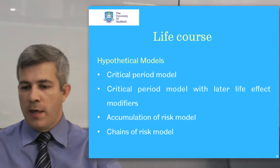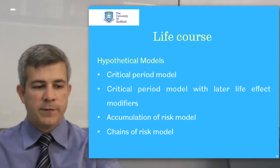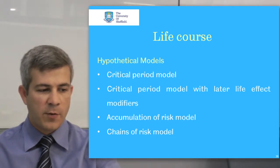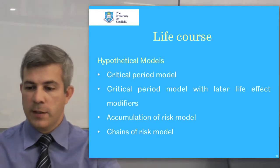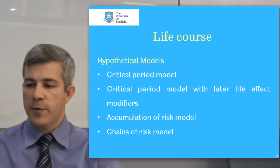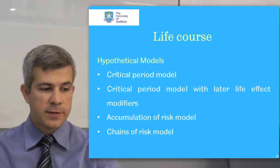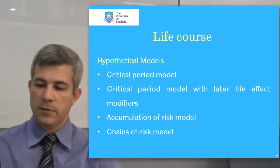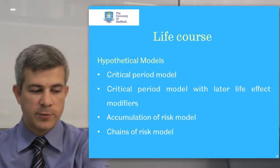The purpose of life course epidemiology is to build and test theoretical models that postulate pathways linking exposures across the life course to later life health outcomes. These models explicitly require the temporal ordering of exposures and their interrelationships across the life course. Four broad hypothetical models have been proposed: the critical period model, the critical period model with later life effect modifiers, the accumulation of risk model, and the chain of risk model.